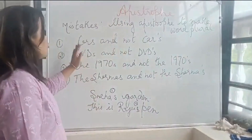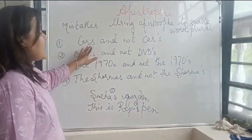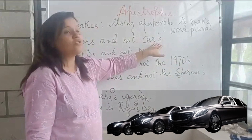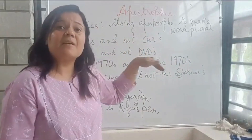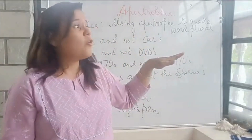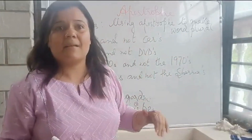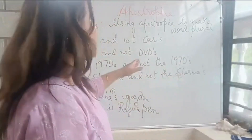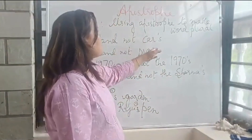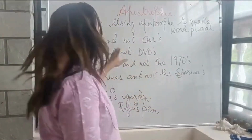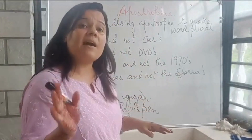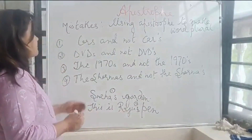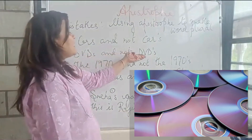So let's see. The word is 'cars' — not C-A-R apostrophe S. When I travel, I see a lot of hoardings that say 'car's workshop' — that is wrong. Cars is the plural: C-A-R-S, no apostrophe. Similarly, it is DVDs — not DVD apostrophe S.